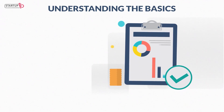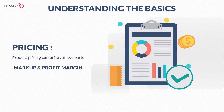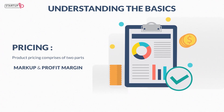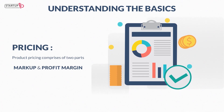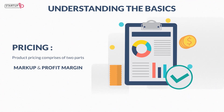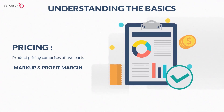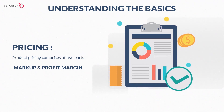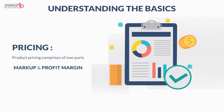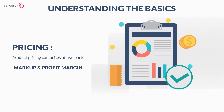Understanding the basics: product pricing comprises two parts — markup and profit margin. Let's now look at these terms and the math behind the numbers.